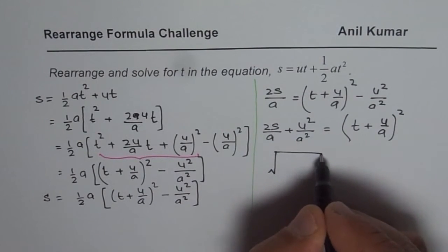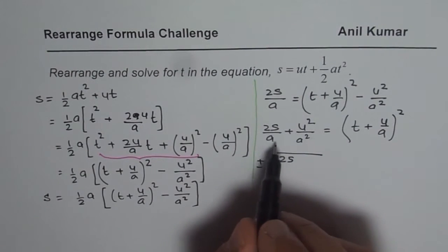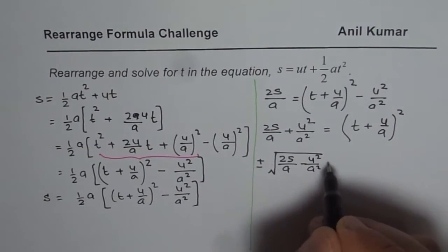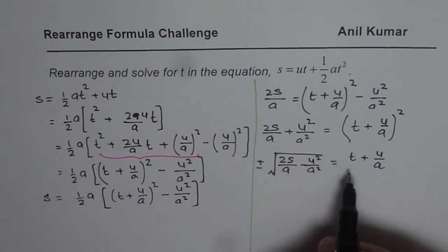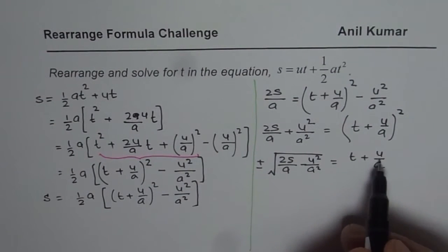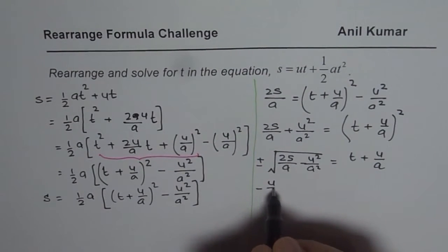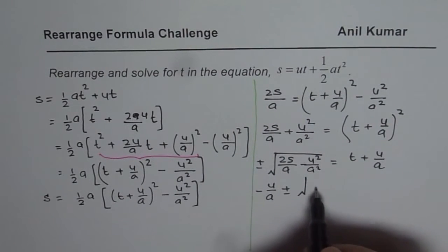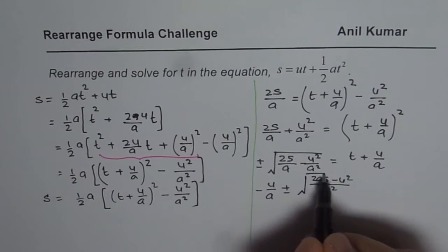Whenever you square root, you have to write plus and minus. 2s, you can take a square common also. At present, I will write as such. Then we will take a square common. Equals to t plus u over a. And then you can isolate t. So t will be bringing u over a to the left side. We get minus u over a plus or minus square root of. So we will take a square common. So we get 2as minus u square square root.